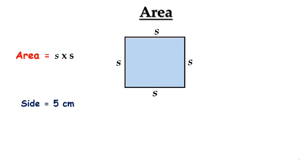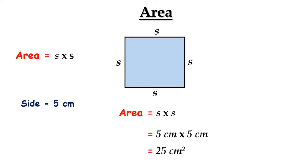Suppose the length of the side of the square is 5 cm. Then what would be its area? Using the formula, area equals side into side, that is 5 into 5. 5 into 5 is 25, and cm into cm is cm square. So, area equals 25 square cm.